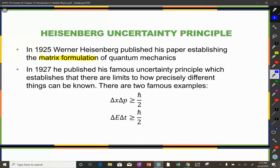Two years later, Heisenberg published his famous uncertainty principle, which comes in two common flavors. There are a lot of uncertainty relations. Any time you have two observables that don't commute, you can't know them both at the same time with arbitrary precision. We're not going to worry about all of those, but we have two pairs, and you would think that all uncertainty relationships were h-bar over 2, but they're not — it just happens that these two are the same.